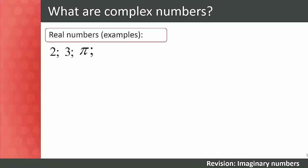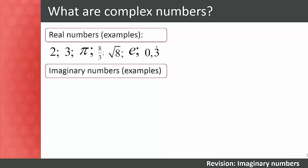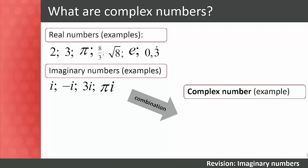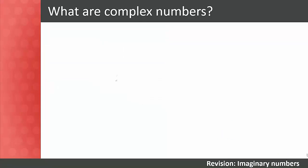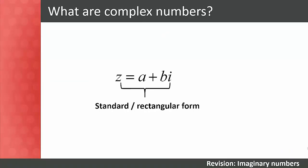We have real numbers such as 2, 3, π, 8/3, √8, e, and 0.3 recurring, and imaginary numbers such as i, −i, 3i, and πi. Combining these two gives a complex number. For example, z = 7 + 4i is a combination of a real number and an imaginary number — it has a real part and an imaginary part. Complex numbers in the form z = a + bi are said to be in standard form or rectangular form.